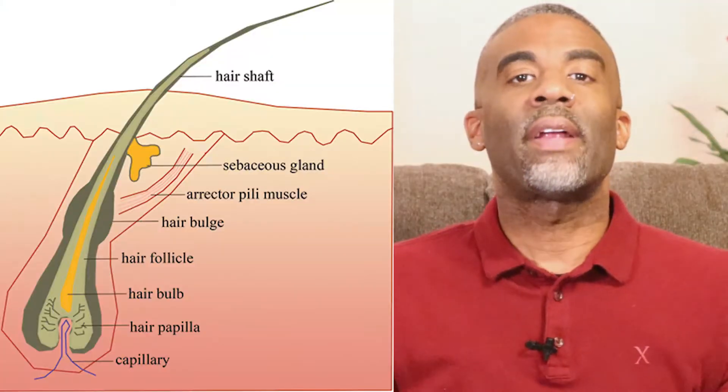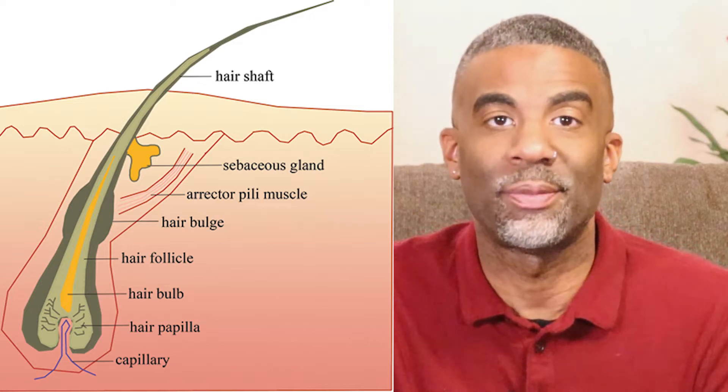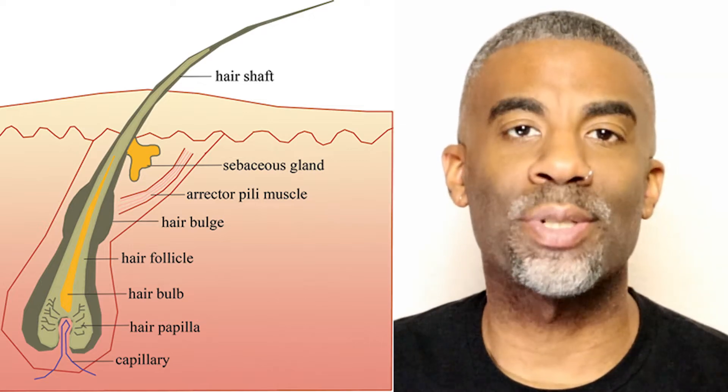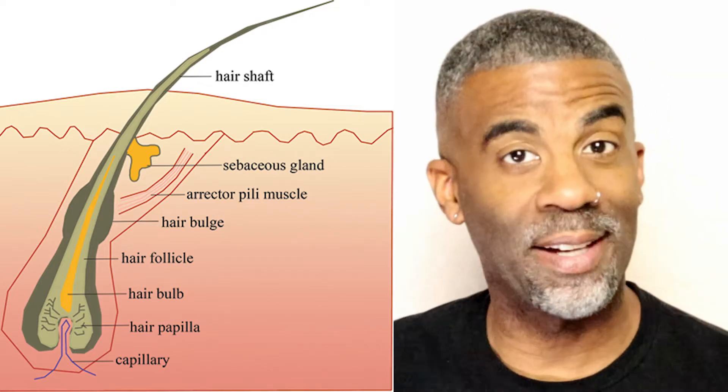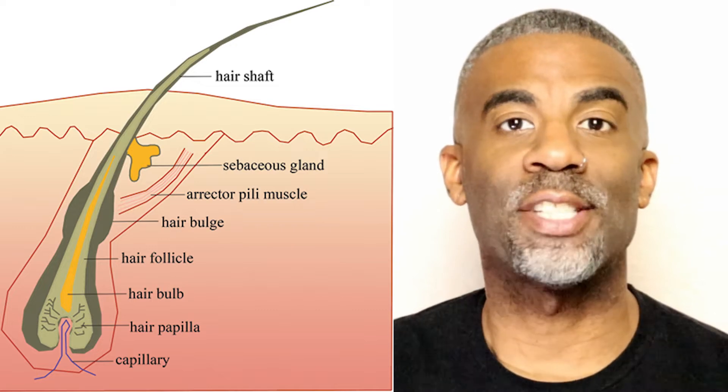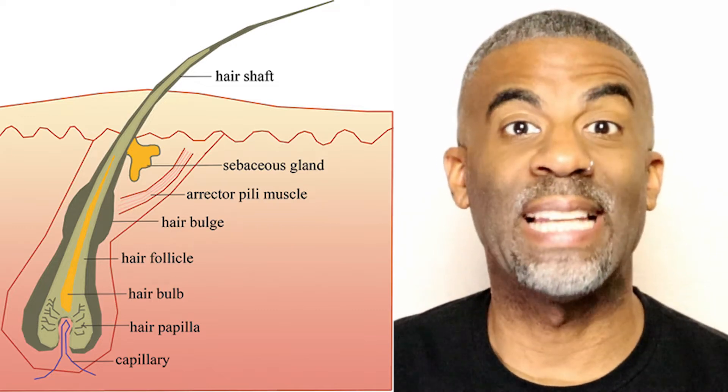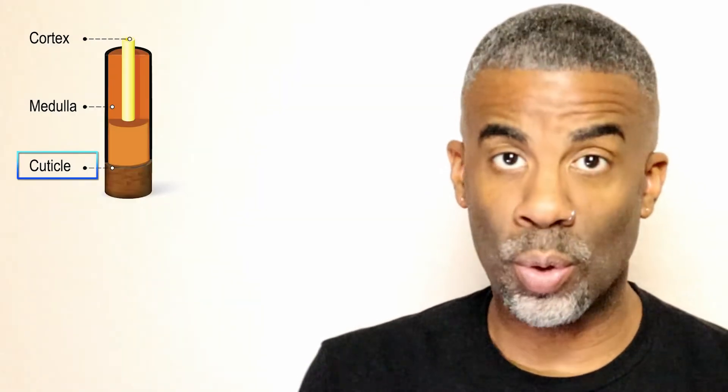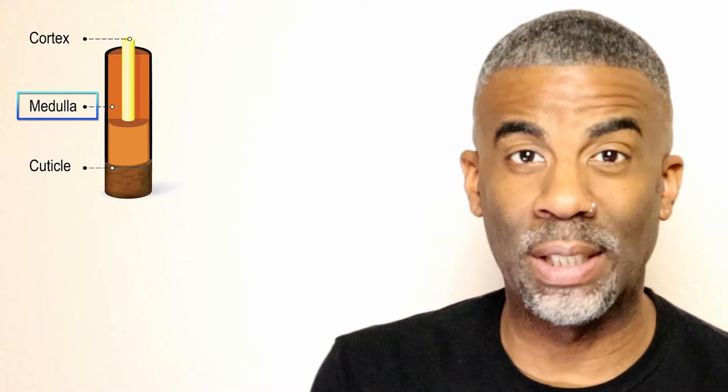We can't see the full extent of a person's hair without the aid of a microscope, but there is so much more to it than its color and coarseness. Let's talk about hair shaft structures. The hair shaft has three main layers called the cuticle, cortex, and medulla.